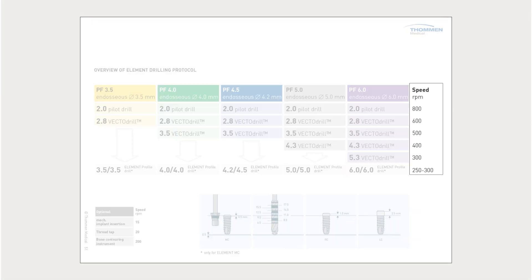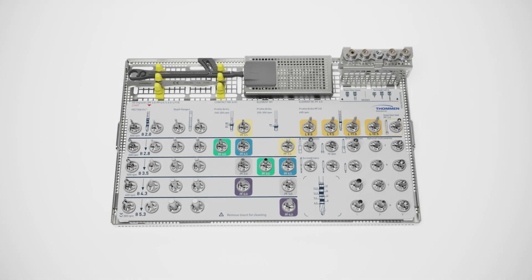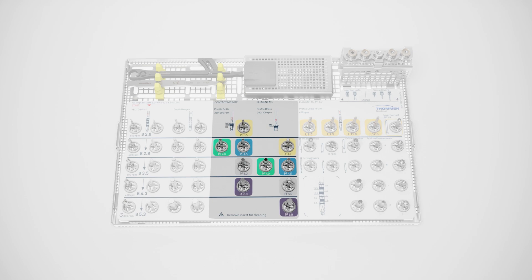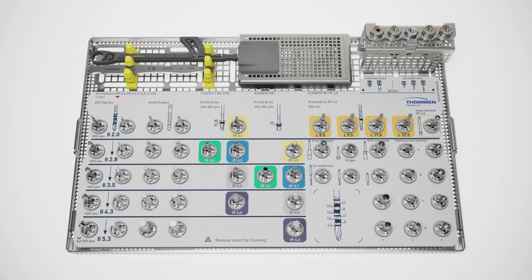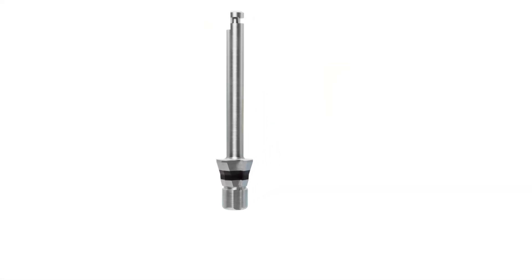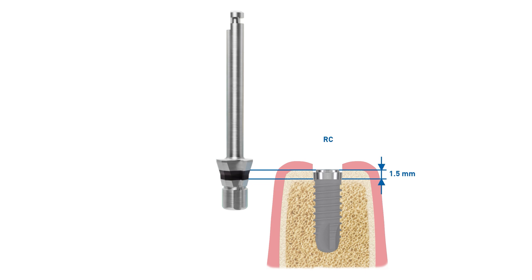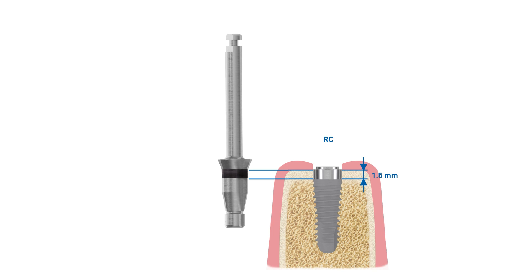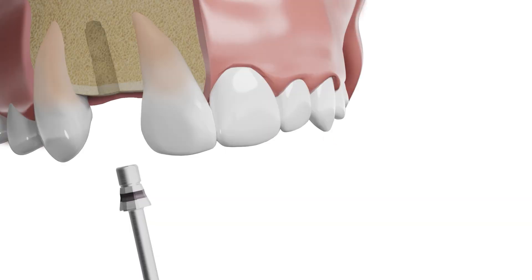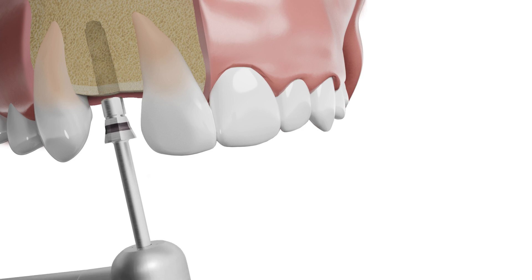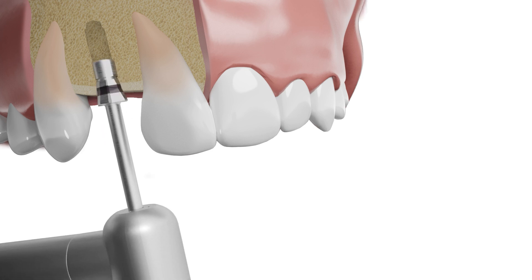While following the drilling protocol, please adhere to the recommended rotation speeds to avoid overheating and potential instrument fractures. Due to the varying design of Element and Contact implants, a corresponding profile drill for each implant line and platform diameter exists. Element implants only require profile drilling if the implant collar is placed subcrestally to ensure enough space for the prosthetic solution. Generally, the design of Element RC implants allows for a flexible insertion depth. Cone-shaped Contact implants always require the use of a profile drill. Continue by using the Element Platform 4 profile drill to ensure enough space for the subcrestally placed implant collar.